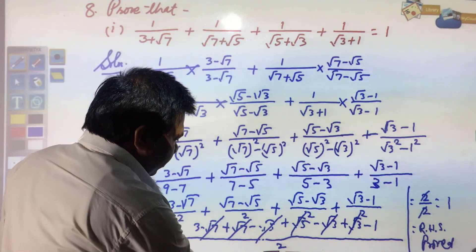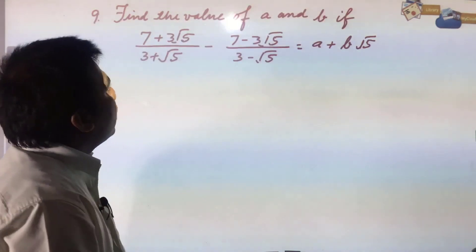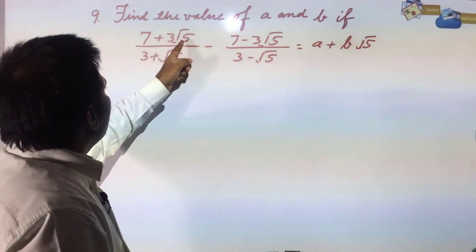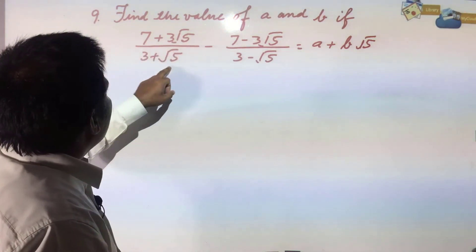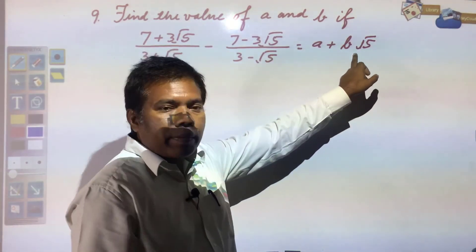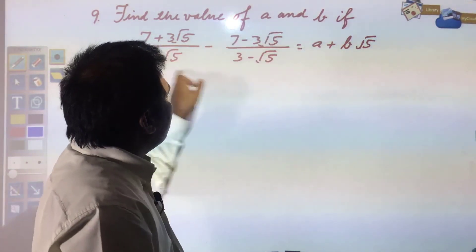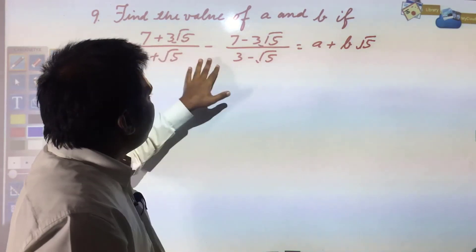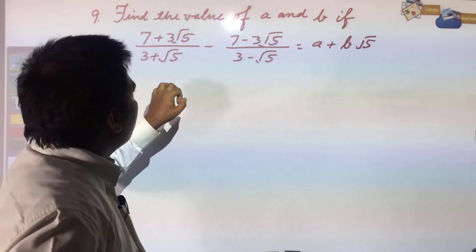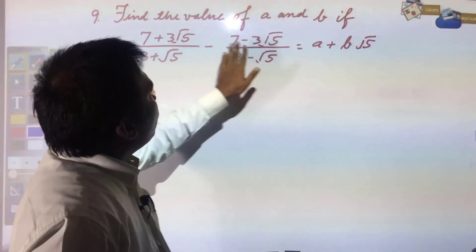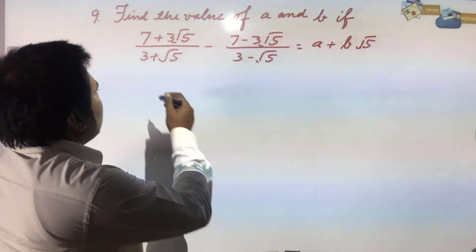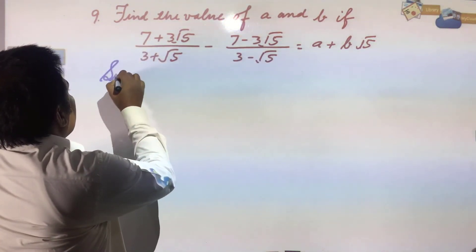Next question: find the value of a and b if (7 + 3√5)/(3 + √5) - (7 - 3√5)/(3 - √5) = a + b√5. Similar questions have been solved before, so I do not think you will have a problem. If two or more terms are there, each is required to be rationalized separately.